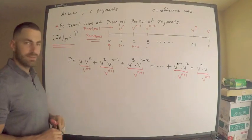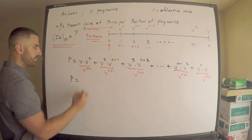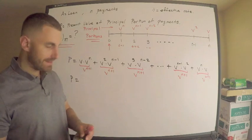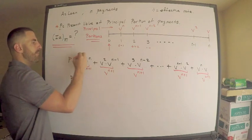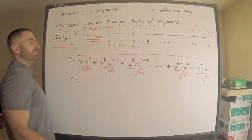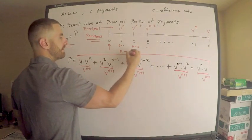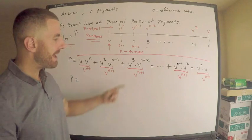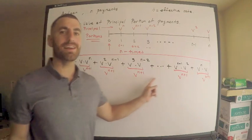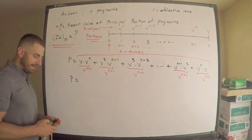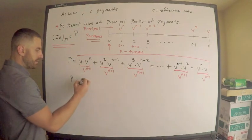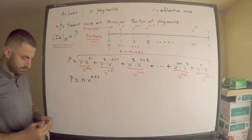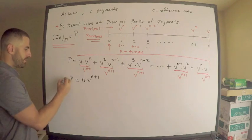So P equals v^(n+1) added to itself n times — that's n payments total. Adding anything to itself n times yields n times that thing, so P = n · v^(n+1). Combined with the loan amount a = a-angle-n, I now have everything I need.